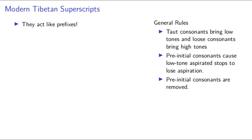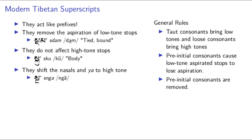The superscripts do the exact same thing — there shouldn't be a surprise, seeing as the prefixes and superscripts fill more or less the same role, both being consonants that are pronounced before the main radical. The only real difference is that the superscripts are generally more sonorous and they can appear after the prefix ba. But as far as their role in the modern language goes, they still have the same effects on tone and aspiration as the prefixes do. They cause high tones on nasals and ya in the same way, and they remove the aspiration on low tone stops. Clusters featuring two pre-initial consonants — that is, labial ba followed by a superscript followed by a radical — are still generally simplified into just that initial consonant.